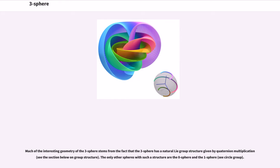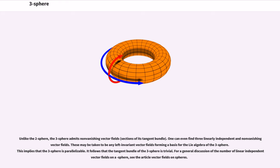Much of the interesting geometry of the three-sphere stems from the fact that the three-sphere has a natural Lie group structure given by quaternion multiplication. The only other spheres with such a structure are the zero-sphere and the one-sphere. Unlike the two-sphere, the three-sphere admits non-vanishing vector fields. One can even find three linearly independent and non-vanishing vector fields. These may be taken to be any left invariant vector fields forming a basis for the Lie algebra of the three-sphere. This implies that the three-sphere is parallelizable.